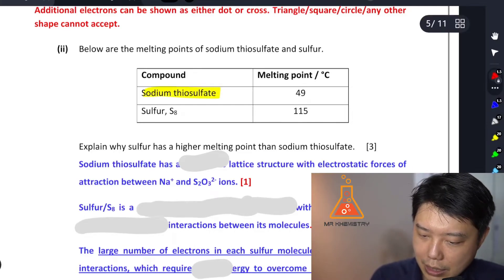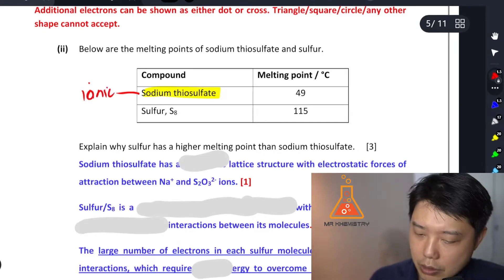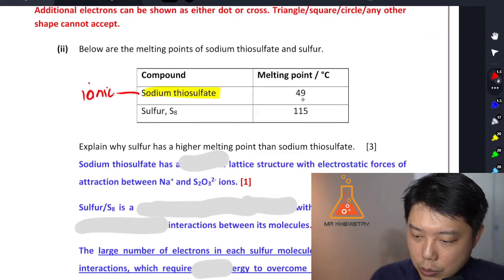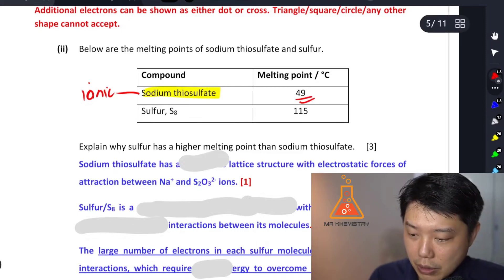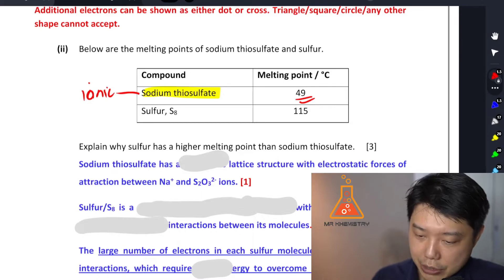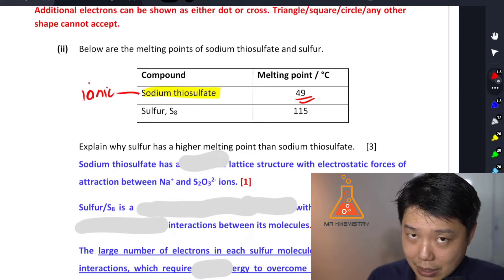And if this compound is ionic, you certainly don't expect the melting point to be 47 or 49 degrees Celsius. You expect it to be much higher, but we're going to accept the data as it is. This is what the question wants us to explain.